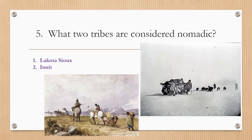What two tribes are considered nomadic? The Lakota Sioux and the Inuit. The Lakota Sioux had the tipi, which could easily be folded down and transported on a move. In the same way, the Inuit Indians lived in igloos, which as we watched in the video can be made in almost 45 minutes. Using the natural resources around them, these nomadic peoples were still able to survive while they followed their food sources.